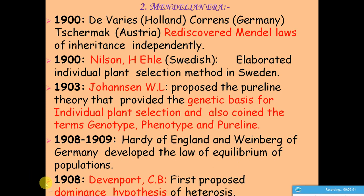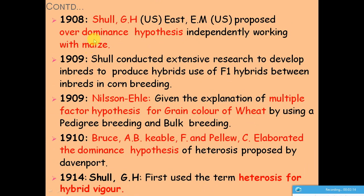In 1908, C.B. Davenport proposed the dominance hypothesis. Also in 1908, G.H. Shull and E.M. East independently proposed the overdominance hypothesis, suggesting that the superiority of hybrids could be explained by the over-expression of heterozygous gene combinations.